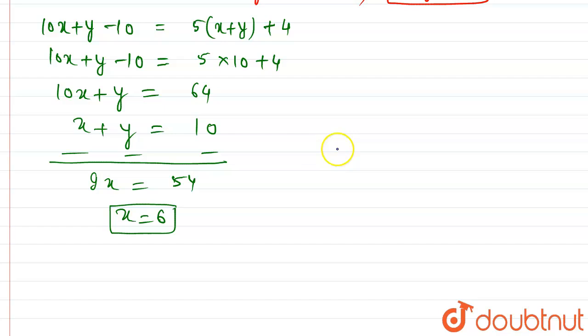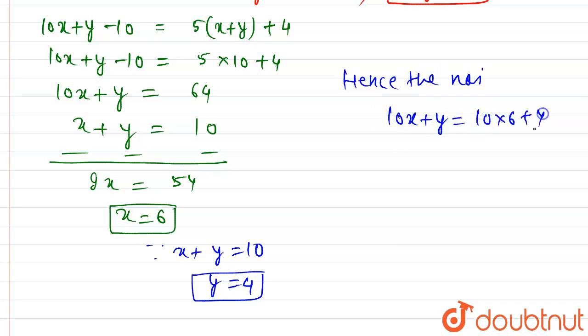Now, putting x equals 6, since x plus y equals 10, y equals 4. Hence, the number is 10x plus y, which is 10 times 6 plus 4, which is 64.